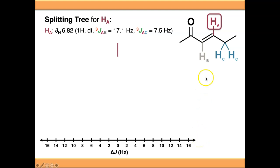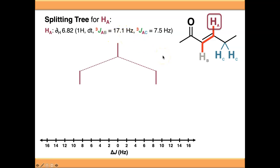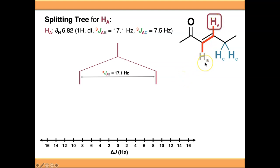We're going to show the couplings to each of these three protons individually. I tend to start with the largest coupling, which is the one between A and B in this case. Starting out with the 3JAB coupling, it's a 17.1 Hz magnitude coupling, so we show this splitting on the splitting tree. Notice that you go half of 17.1 Hz in one direction and half of 17.1 Hz in the other, so that the gap between the two signals is 17.1 Hz. If protons C weren't here, this would be a simple doublet with a 1:1 ratio and a gap of 17.1 Hz.